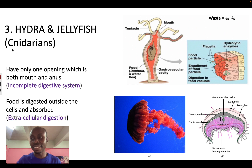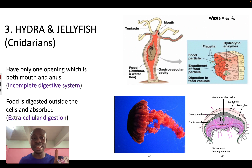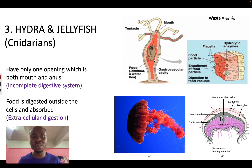Our third group of invertebrates are the cnidarians. Examples are hydra and jellyfish. This is the structure of a hydra — it has an incomplete digestive system, which means it has only one opening that serves as both the mouth and the anus. Food will enter through this opening, and after the food is digested the waste product will move out from this same hole. It is an incomplete digestive system.